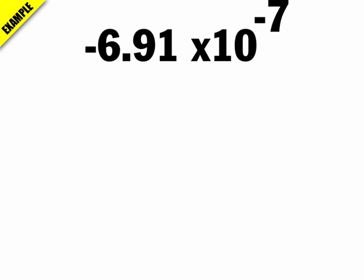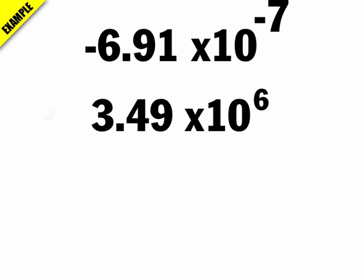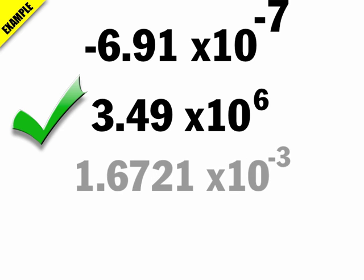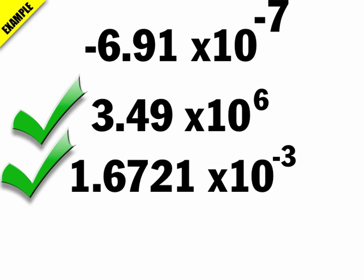Here are some examples of numbers written in scientific notation. 3.49 times 10 to the 6 — that's in scientific notation: one digit to the left of the decimal, any number to the right, and then the exponent. Here's another expression in scientific notation: 1.6721 times 10 to the negative 3, with the 1 as the one digit to the left of the decimal.